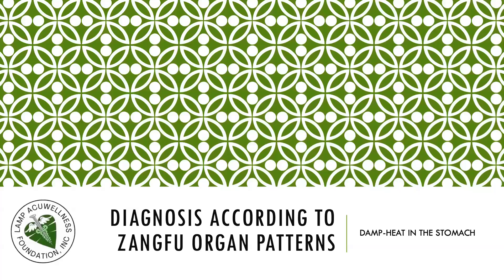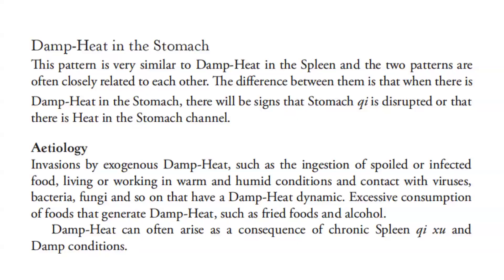Diagnosis according to Zangfu organ patterns - Damp Heat in the Stomach. This pattern is very similar to damp heat in the spleen, and the two are often closely related. The difference is that when there is damp heat in the stomach, there will be signs that stomach qi is disrupted or heat in the stomach channel. Etiology: invasions by exogenous damp heat such as ingestion of spoiled or infected food, living or working in warm and humid conditions, and contact with viruses, bacteria, or fungi. Excessive consumption of fried foods and alcohol, and chronic spleen deficiency with dampness, can also give rise to damp heat.